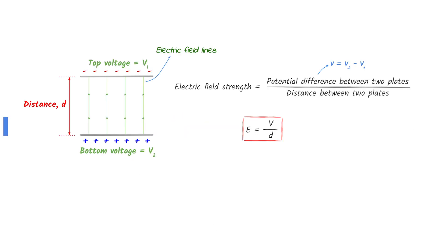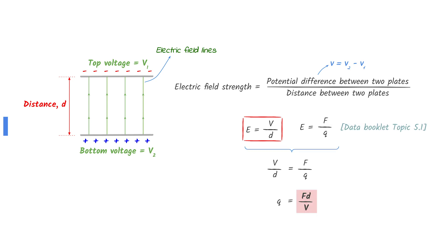The electric field strength between two plates is the potential difference divided by the distance between the plates — this equation is not given in the data booklet. Combine this equation with the electric field strength equation from the data booklet, then rearrange to make charge q the subject to find your answer.